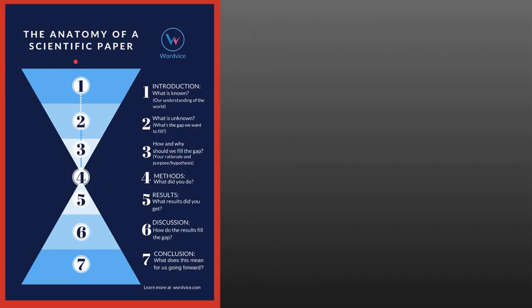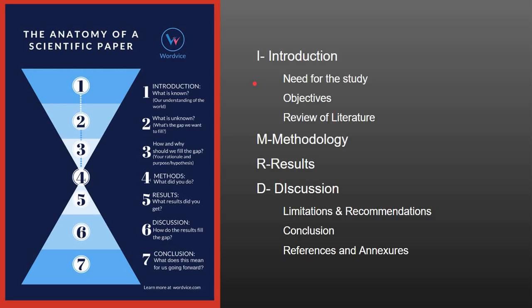This slide shows the anatomy of a scientific paper. In introduction, we answer three questions: what is known, what is not known, and how and why we should fill the gap. In methods, we answer what we have done. In results, we answer our research question. In discussion, we make the results fill the gap between known and unknown. In conclusion, we convey what this study means for us going forward.